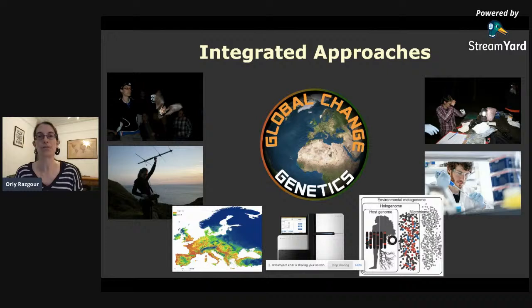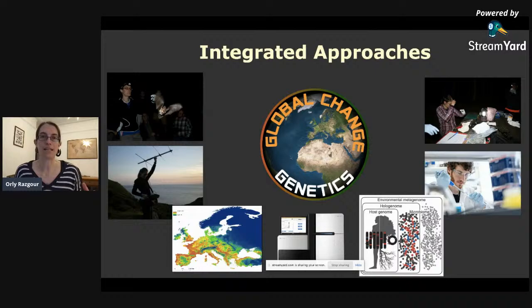We do this through using integrated approaches — combining genomic data with ecological data and environmental data, and using different modeling approaches in order to really assess how biodiversity is likely to be affected by future changes like climate change. This kind of research has been made possible thanks to the genomic revolution that has happened over the last few decades.